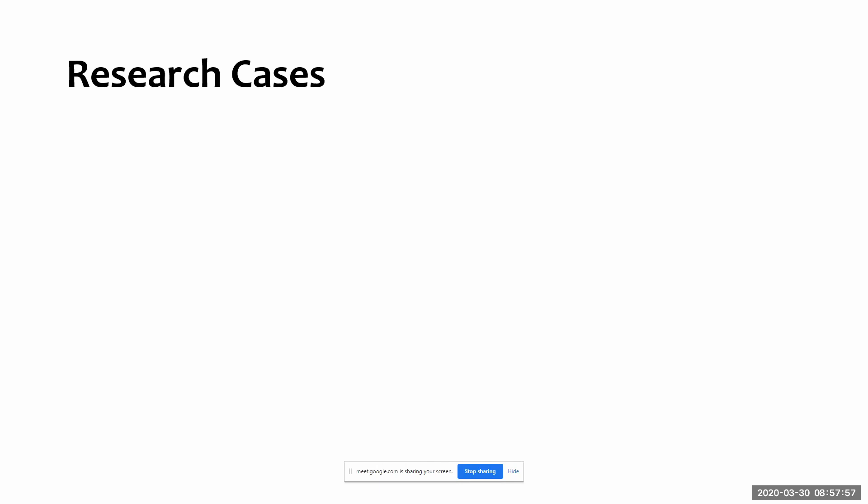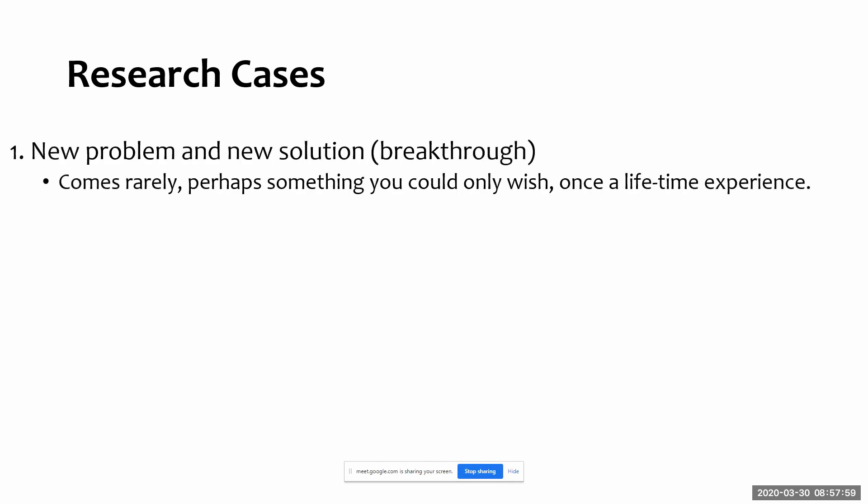How can you make a strong case for your research? There are four different cases. One is when you find a new problem and you come up with a new solution — something happening in the world that no one has seen before, and you come up with a new solution for it. This is called breakthrough research. It's very uncommon; most of the research we see these days does not fall in this category. Think about people who get the Nobel Prize for physics, chemistry, or mathematics — they get it based on breakthrough research.